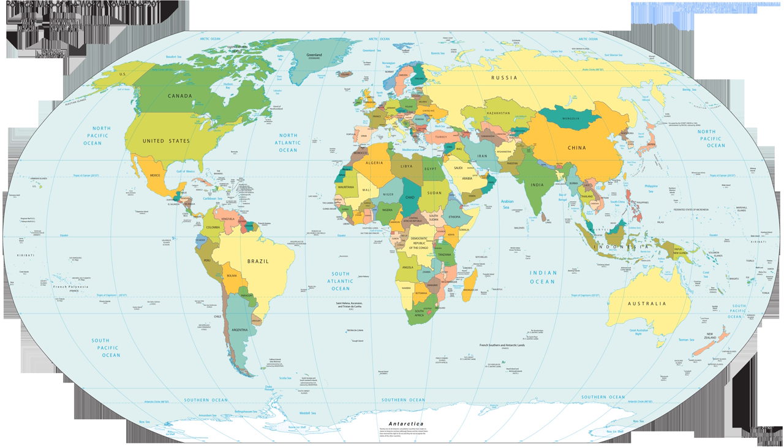The word 'country' comes from Old French 'contrae', which derives from Vulgar Latin 'terra contrata', meaning 'land lying opposite' or 'land spread before', derived from 'contra', meaning 'against' or 'opposite'. It most likely entered the English language after the Franco-Norman invasion during the 11th century.